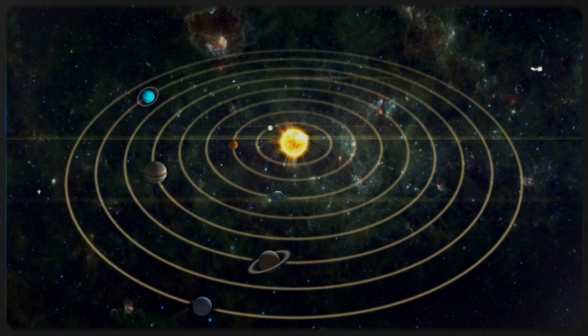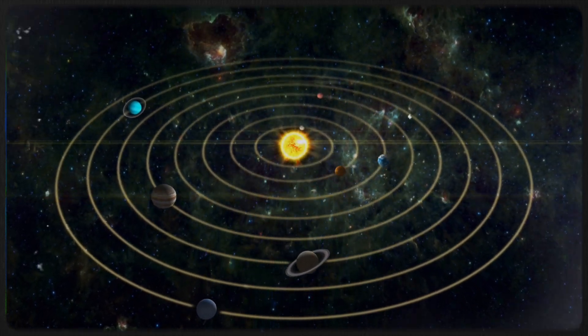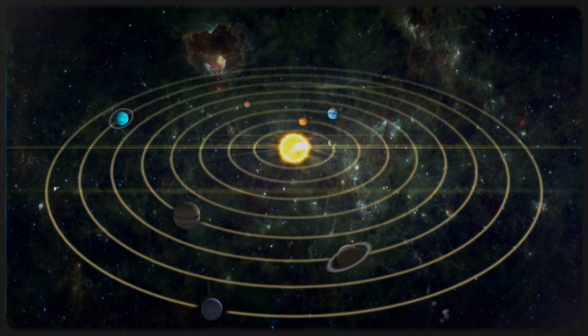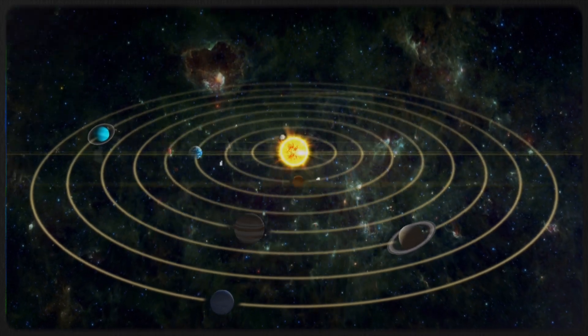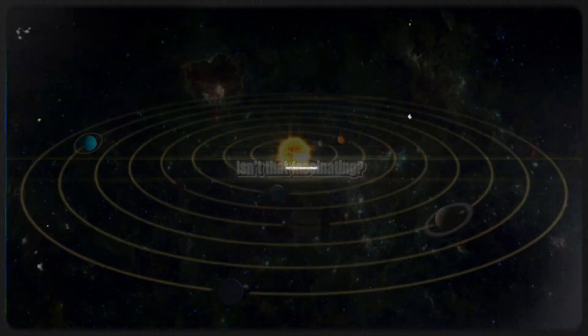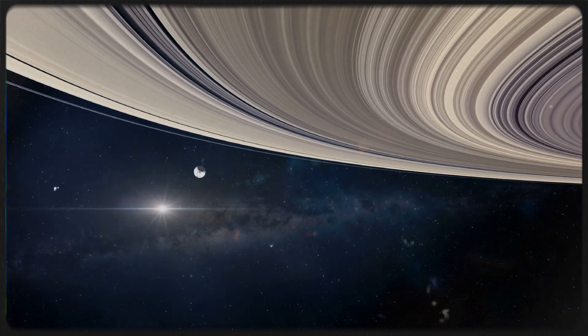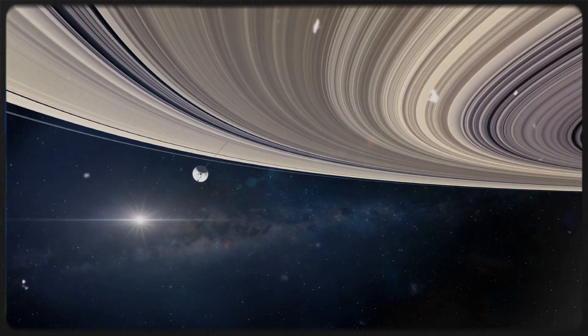These findings have uncovered previously unknown or seemingly impossible aspects of our solar system, enriching our knowledge of distant celestial bodies. Isn't that fascinating? Voyager 1 reached its primary target, Saturn, nearly 13 years after its launch.